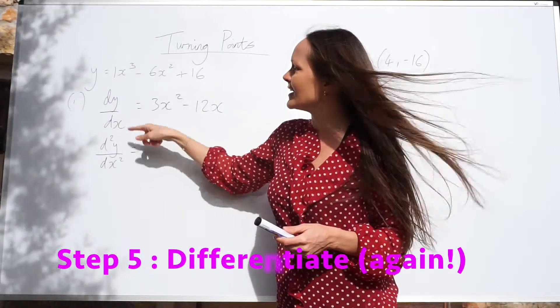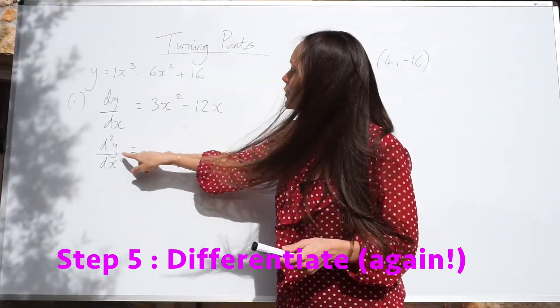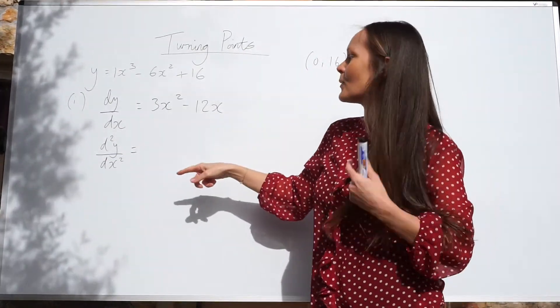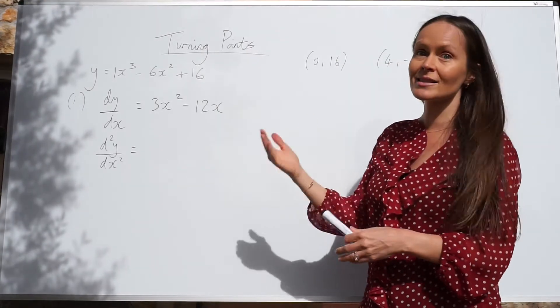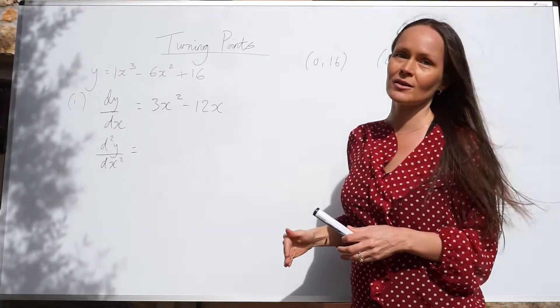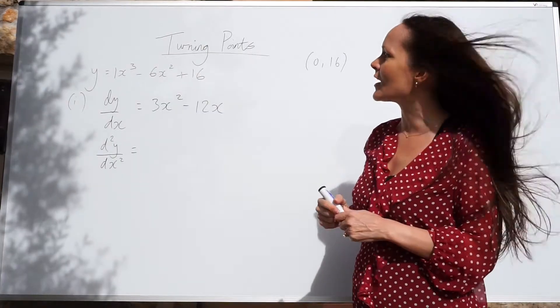So, usually you would write, instead of dy/dx, d²y/dx², or d squared y by dx squared. So you just differentiate this expression. You differentiate a second time.